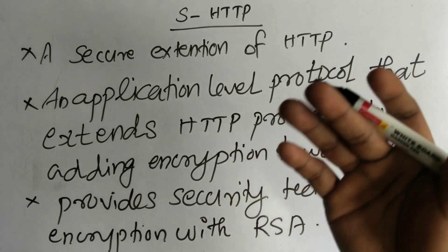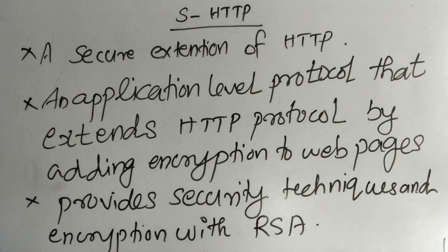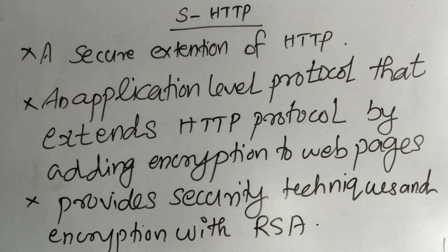SHDTP allows users to access websites and confidently supply their credit card numbers to the browser. SHDTP encrypts the files and the encrypted files are then sent to the merchant. Then SHDTP decrypts the files and relays back to the users' browsers to authenticate the shopper's digital signature. The transaction proceeds as soon as the signature is verified.